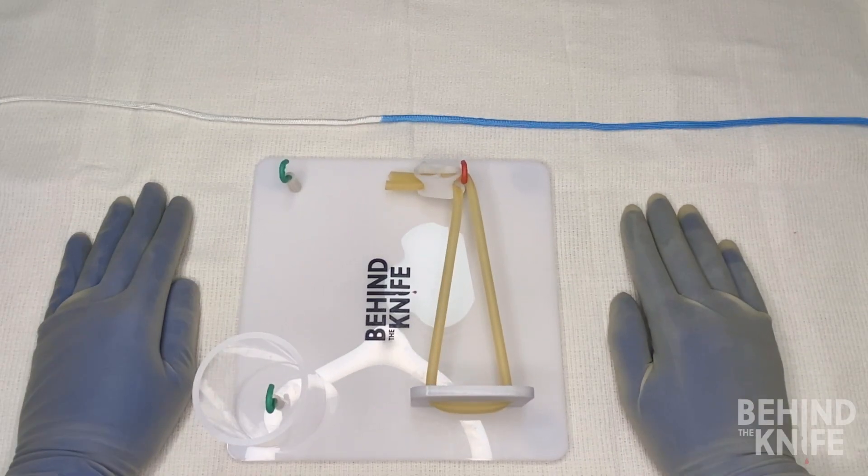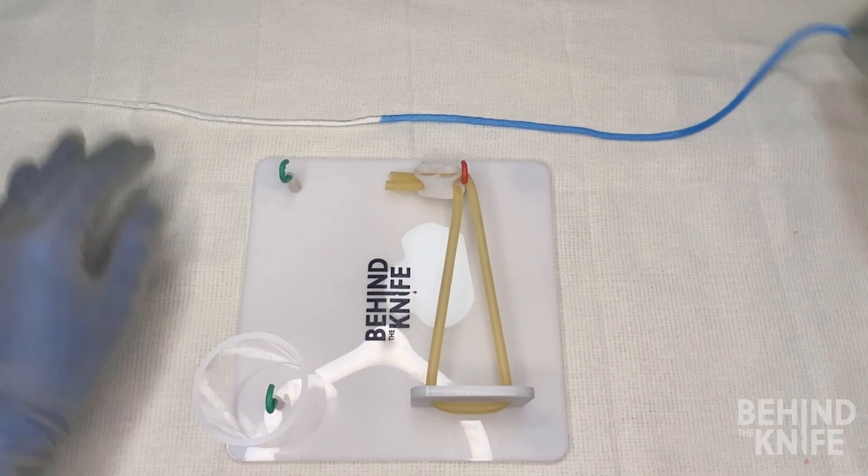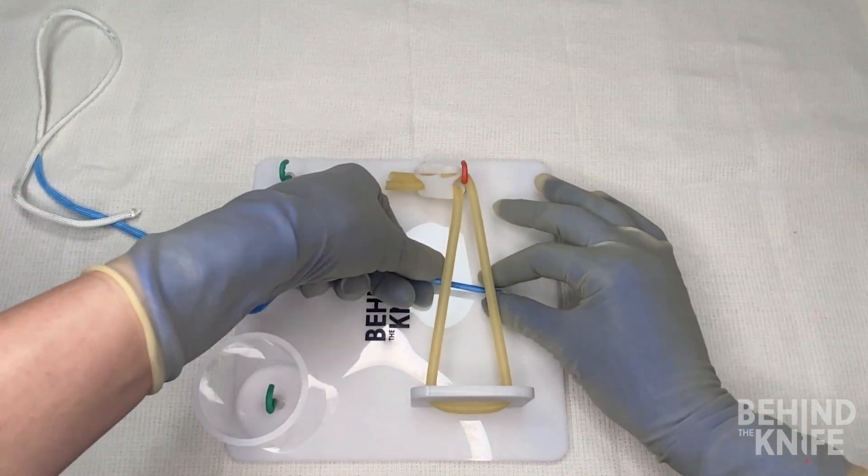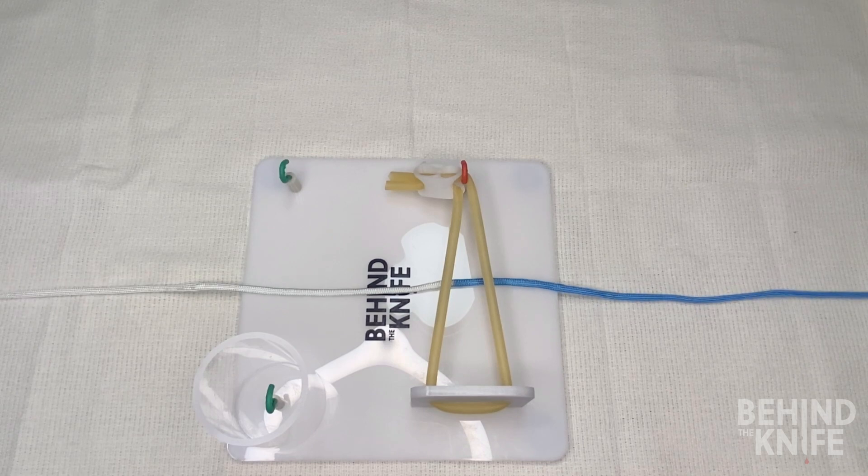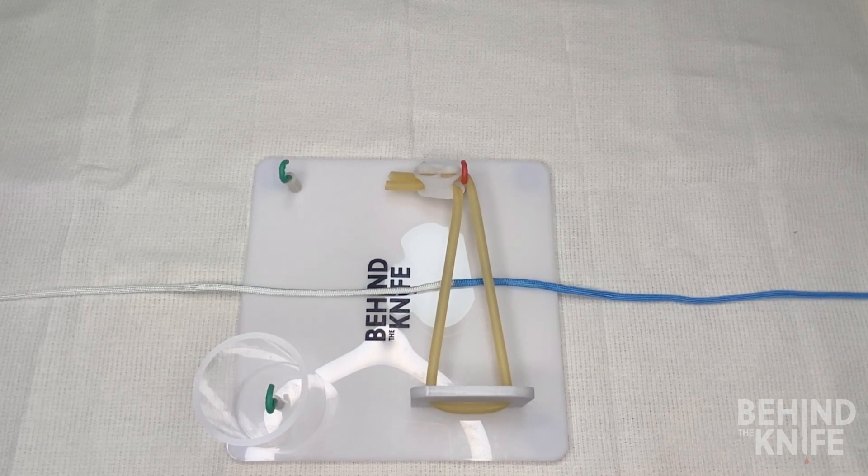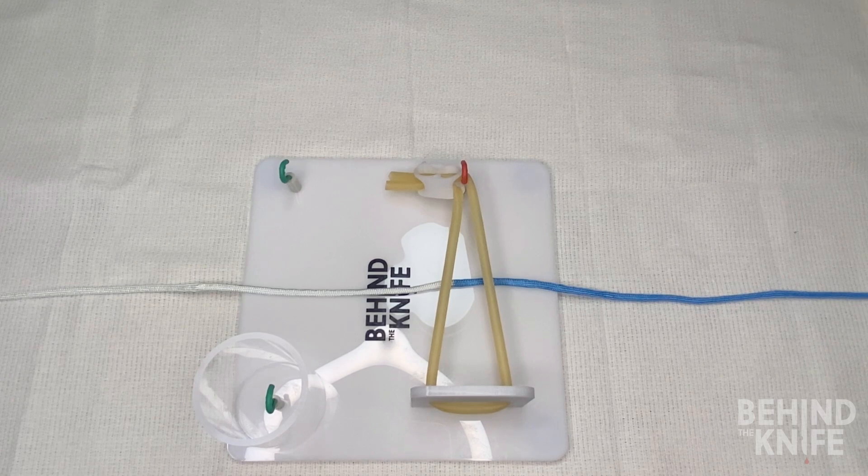So to start, we'll place our knot tying board in front of us, and we'll thread our practice string behind the side that has the Penrose drain. Now for me, I'm going to place the blue side of my string on my right side, and the white side of my string on the left side.